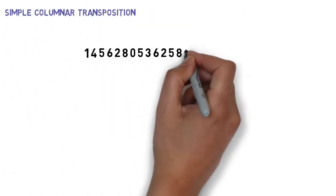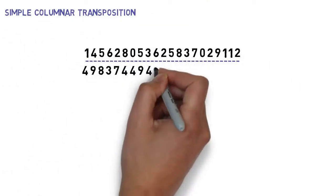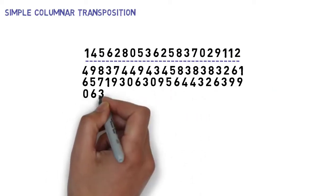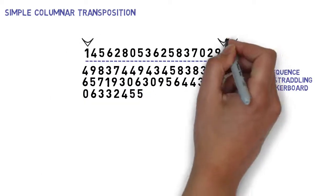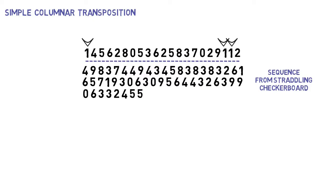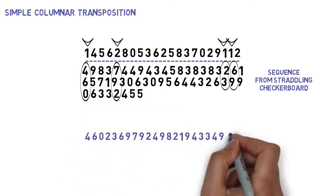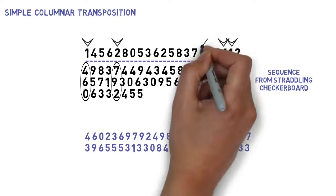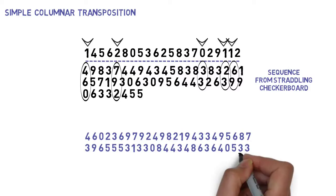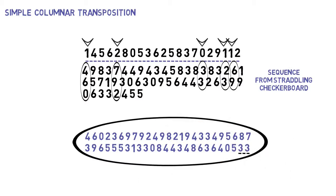We fill out the table of the first transposition with the sequence we got from using the straddling checkerboard. As we did in the previous step, we read out the digits in each column in order using the key. Here we have three columns with index 1, so we go in order of appearance, then we read out the digits in this column of index 2, and so on, till we read out all digits in all columns. As always, column 0 is the last one we read out, since 0 represents a 10 in our process.